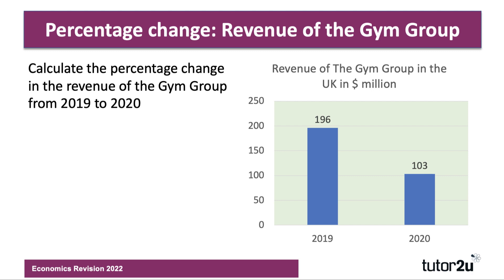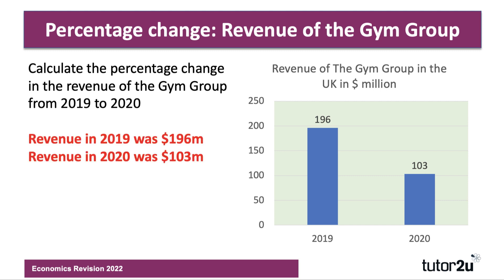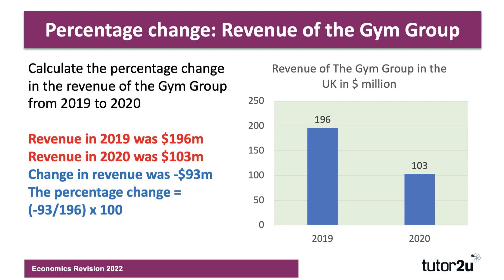2020 was a bad year for the Gym Group. Revenue in 2019 was $196 million; that dropped to $103 million in 2020, so the change was minus $93 million. Dividing by the original of $196 million and multiplying by 100, revenues in 2020 fell by minus 48.2% — a sharp fall in revenues.